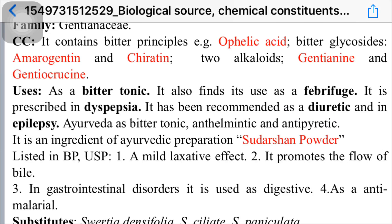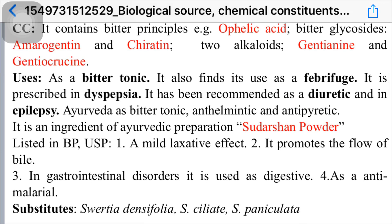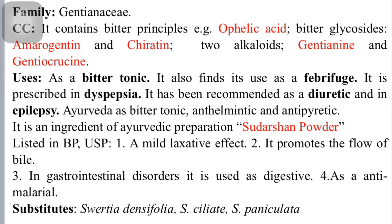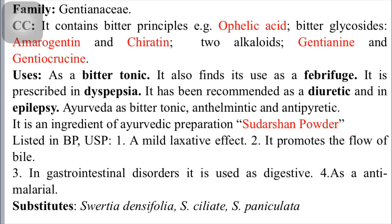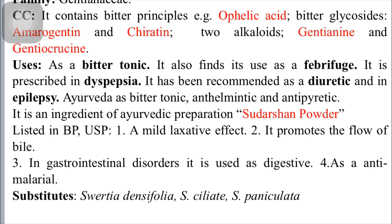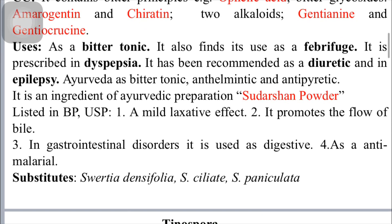The uses of Chirata: it finds use as a febrifuge, which is a medicine that decreases fever. It is prescribed in dyspepsia — a term for indigestion caused by GERD (gastroesophageal reflux disease), and may be a symptom of ulcer or occasionally cancer. It is recommended as a diuretic, a substance that promotes diuresis — increased production of urine.